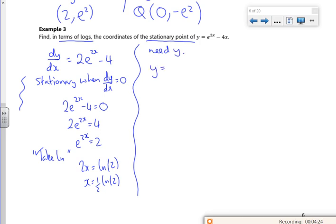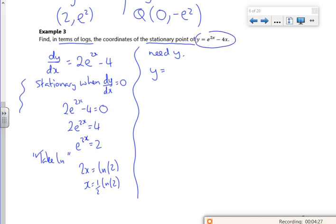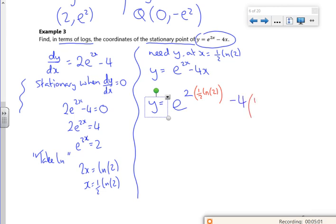So that's the x value. I need the y value. So the original function was e to the 2x minus 4x. So I'm going to do it, so I need y at x equals a half of ln of 2. Right, so what have I got here then? I'm just going to move this y down a little bit to give myself a bit more room. So I've got e to the 2 lots of a half ln of 2.